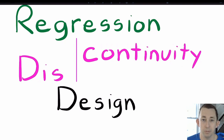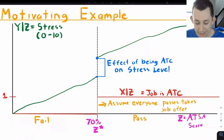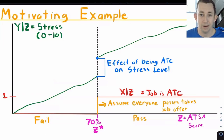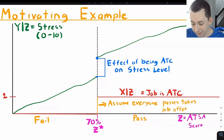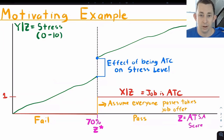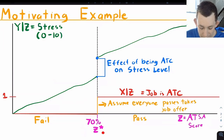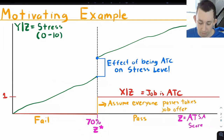The motivating example today is a little different than ones we've used in previous videos. We're still talking about stress on a level from 0 to 10, but instead of talking about the effect of owning a cat, we're talking about the effect of becoming an air traffic controller on your stress level. On the axis we have a Z variable — in order to become an air traffic controller, you have to pass an air traffic skill assessment, or ATSA test. The minimum score you need to pass is 70 percent.